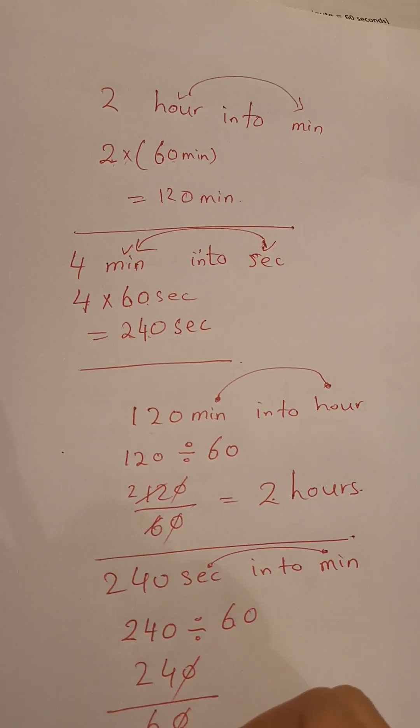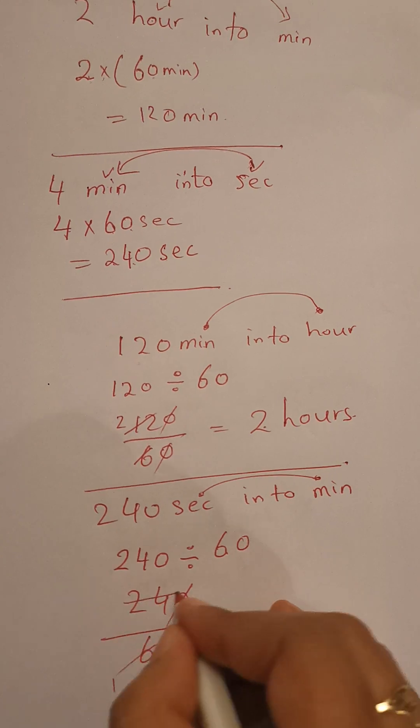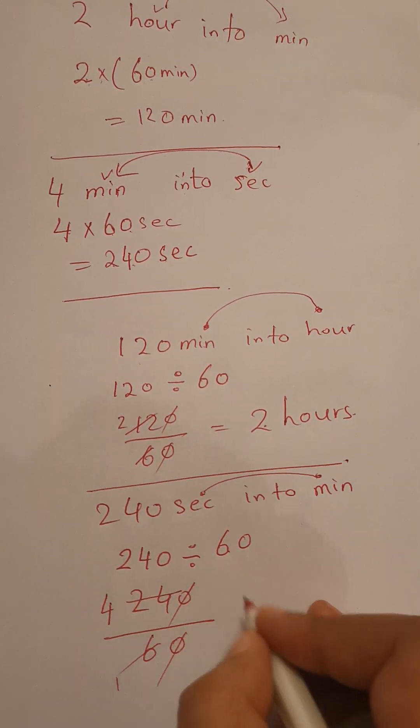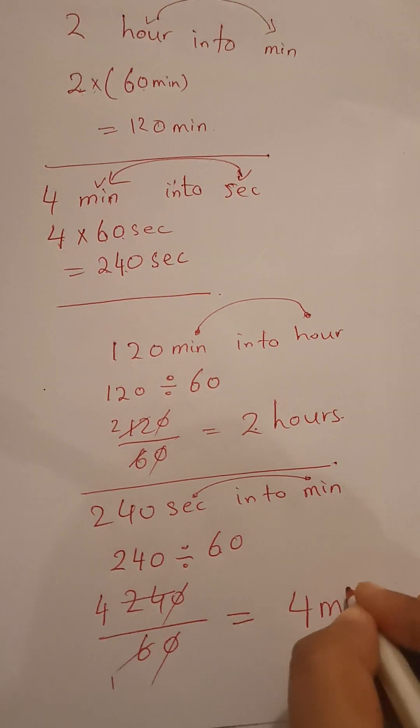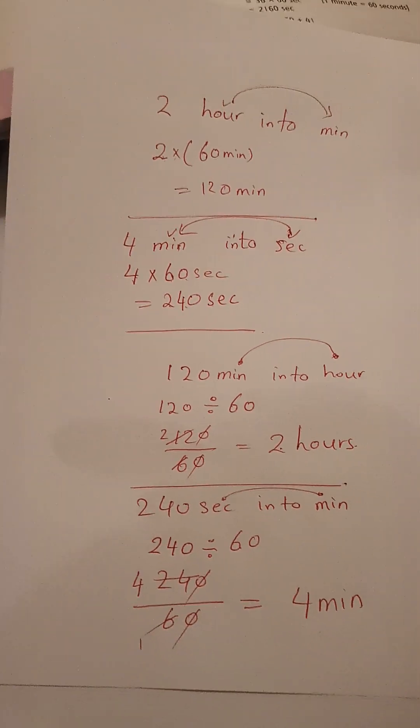Zero cancels with zero. 6 once is 6, 6 fours is 24. So 4 minutes in 240 seconds.